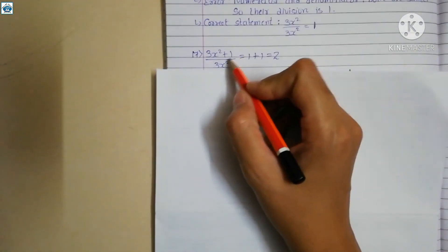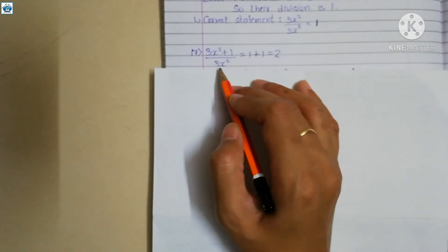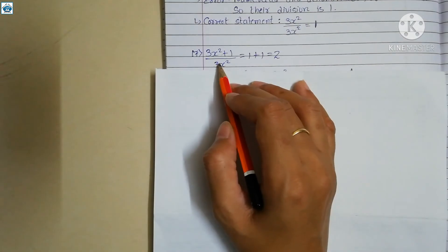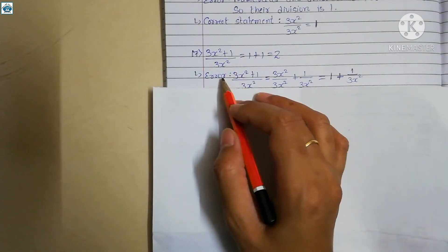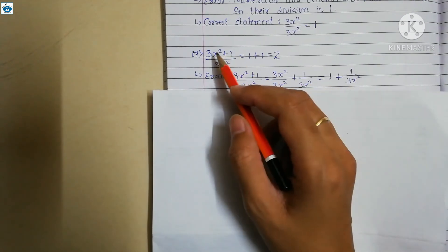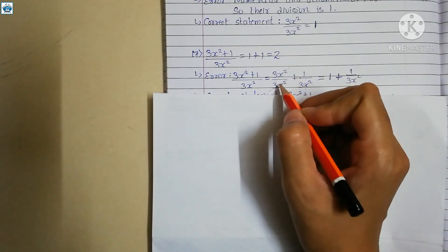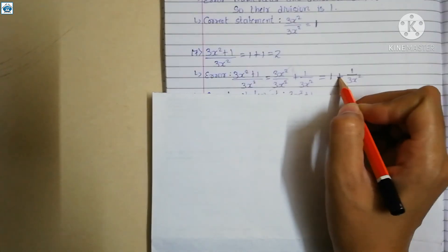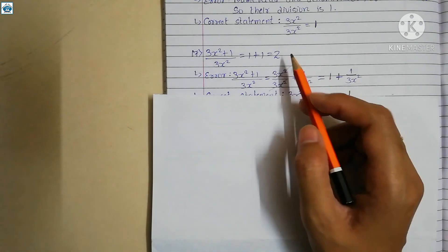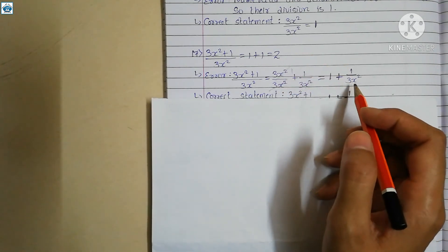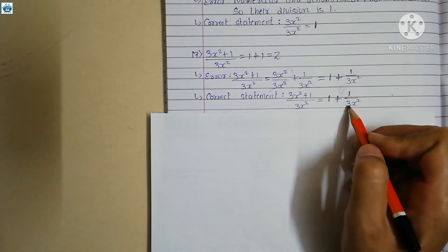Statement 17 is 3x squared plus 1 upon 3x squared equals 2. We can split this fraction individually: 3x squared upon 3x squared plus 1 upon 3x squared. The first part cancels to 1, and the second part stays as 1 upon 3x squared. So the correct answer is 1 plus 1 upon 3x squared, not 2. The correct statement is: 3x squared plus 1 upon 3x squared equals 1 plus 1 upon 3x squared.